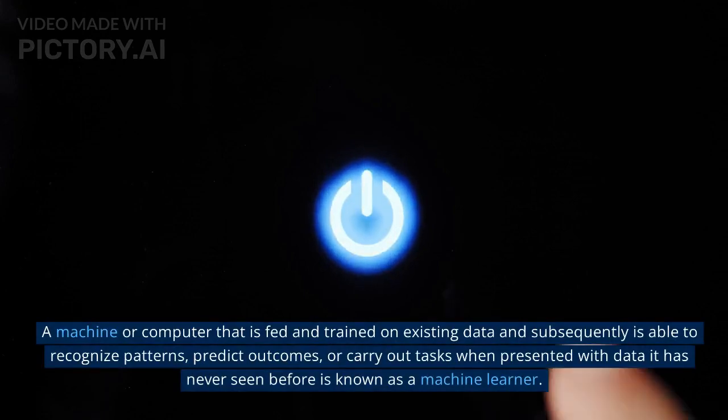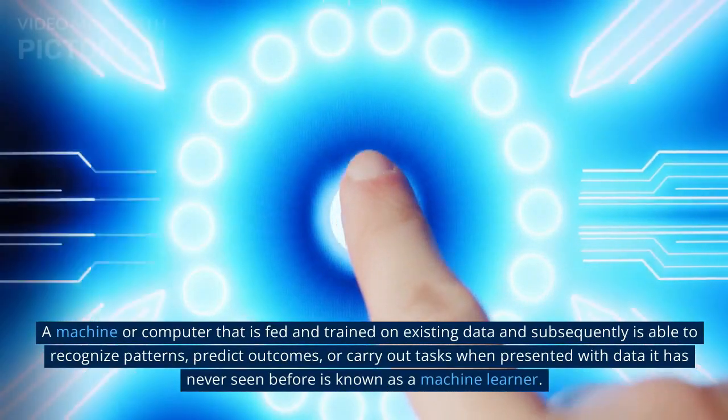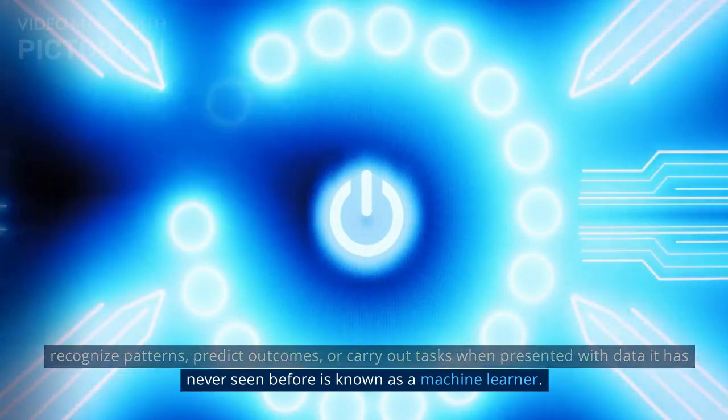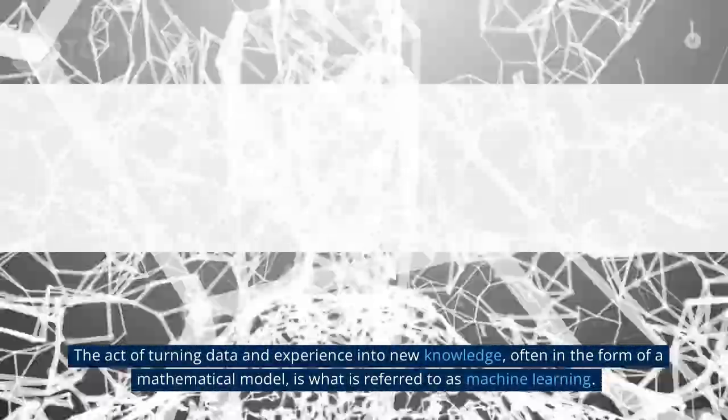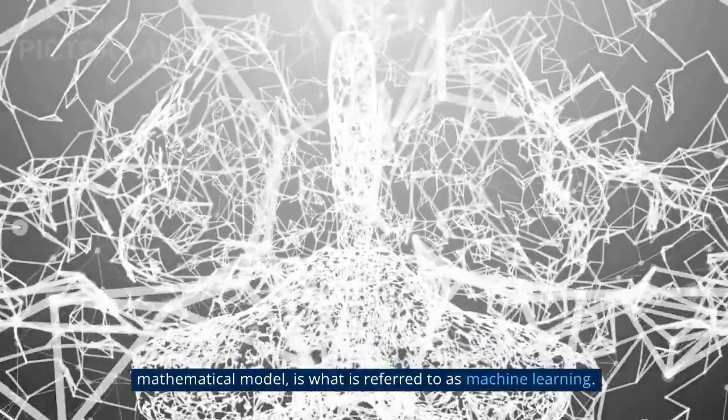A machine or computer that is fed and trained on existing data and subsequently is able to recognize patterns, predict outcomes, or carry out tasks when presented with data it has never seen before is known as a machine learner. The act of turning data and experience into new knowledge, often in the form of a mathematical model, is what is referred to as machine learning.